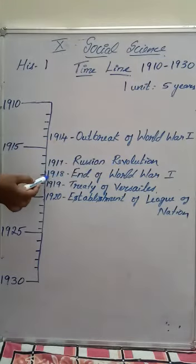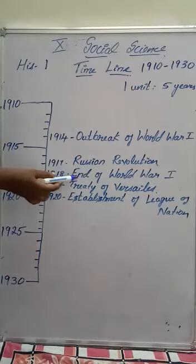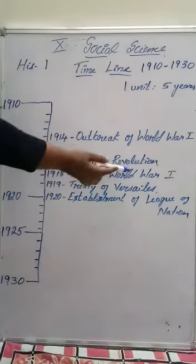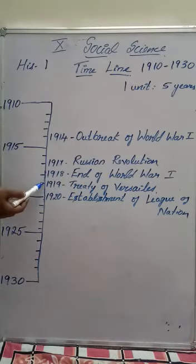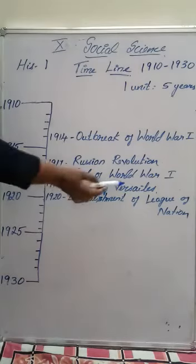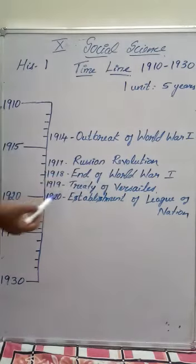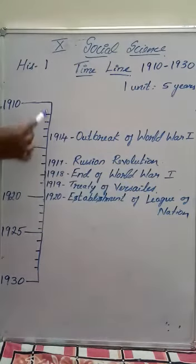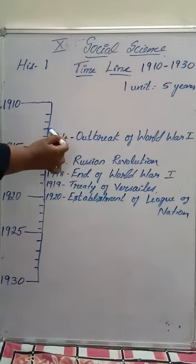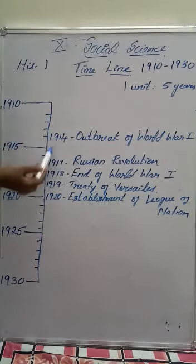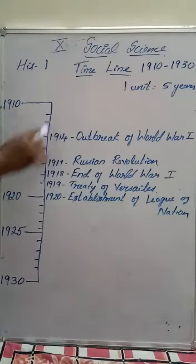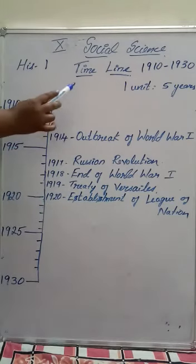During 1918 the World War ended — that is end of World War 1 — so after 1917, mark 1918 as end of the World War. Next, during 1919 the Treaty of Versailles was established, and during 1920 the establishment of the League of Nations. While drawing this, you have to leave some larger space in between the years so that you can neatly present the events. This is your timeline, which is asked for 5 marks.